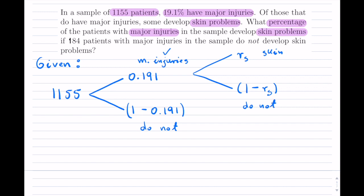And now let's come back to that last sentence because it's important. Now, in that last line, they tell us that we have 184 patients with major injuries in the sample, and they do not develop skin problems. So notice, do not develop skin problems. So I have 184 of those.